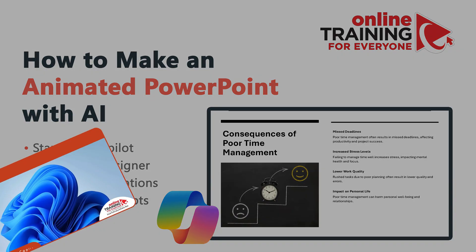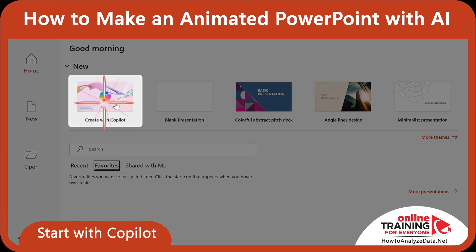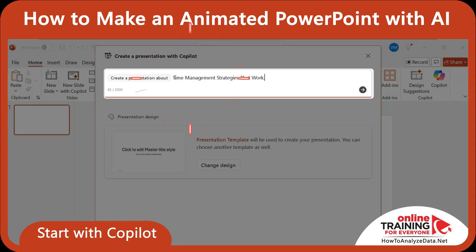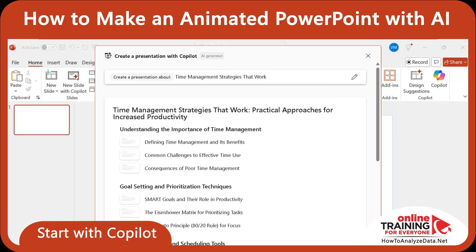To start, let's open PowerPoint and activate Copilot. In the home screen, I clicked 'Create with Copilot.' In the section 'Create a presentation about,' I typed the topic: time management strategies that work. In seconds, Copilot generated an outline for the presentation, which was amazingly good.